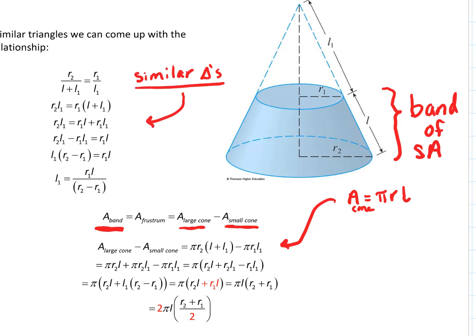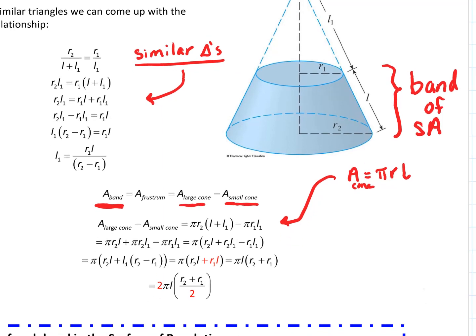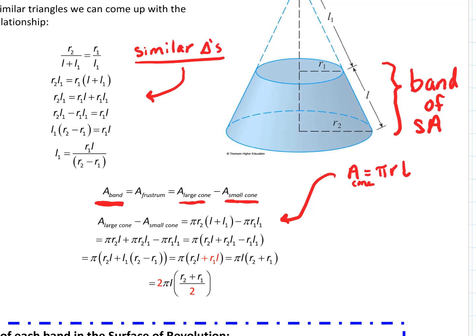Utilizing similar triangles and a little algebra — taking the area of the large cone minus the area of the small cone, expanding it out, dividing by two and multiplying by two — the reason for this last step is that this becomes what we can think of as the average radii of the band. That's going to help us when we set up the Riemann sum to compute this surface area.